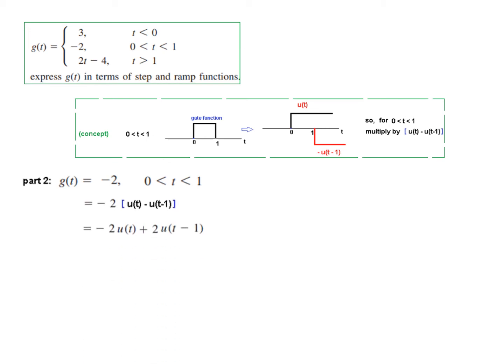In our case, we multiply -2 by the gate function u(t) - u(t-1), and simplify.